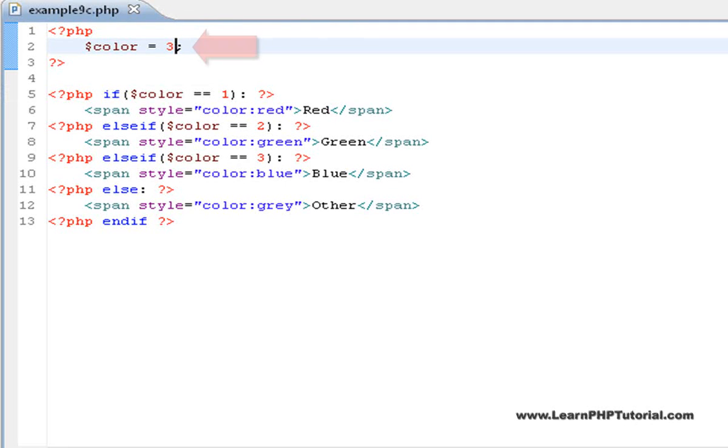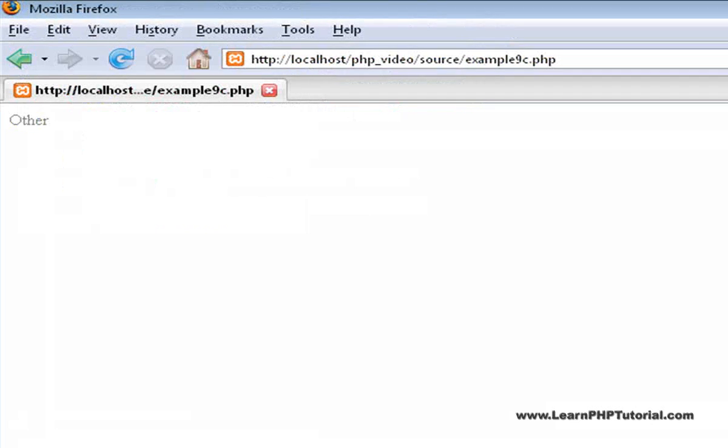Finally, change it to any value except 1, 2, or 3, like 0, and the result is gray.